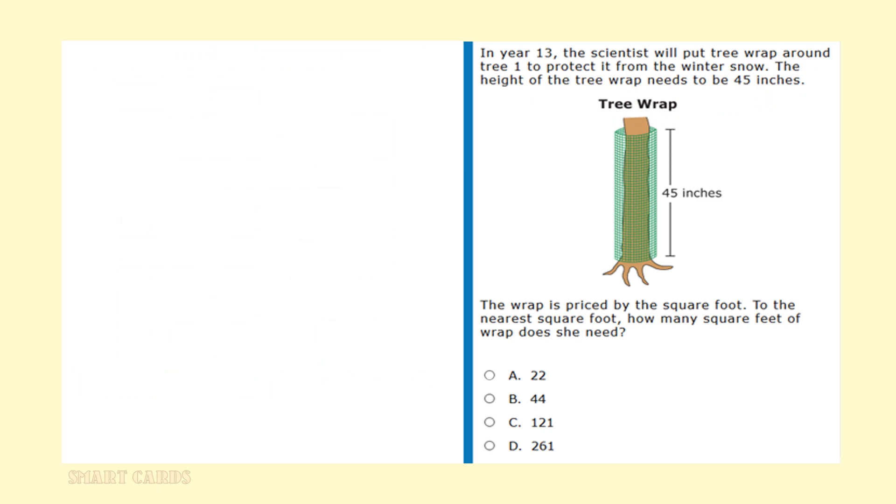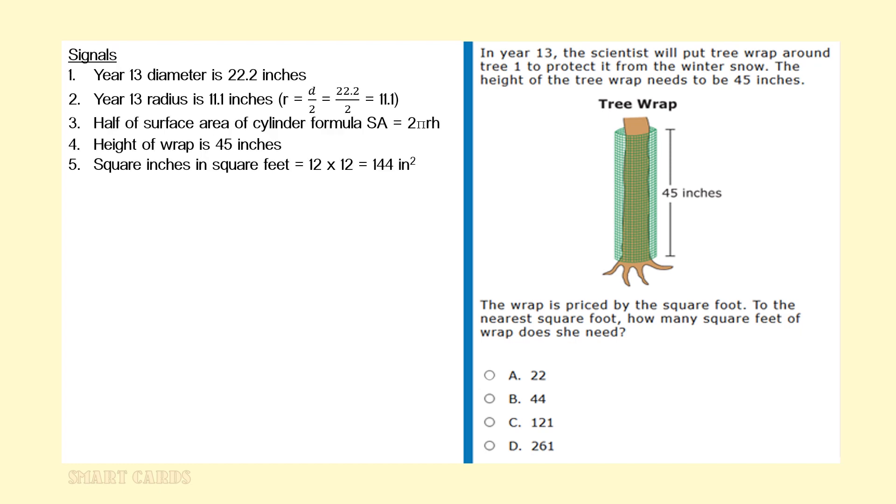In year 13, the scientists will put tree wrap around tree 1 to protect it from the winter snow. The height of the wrap needs to be 45 inches. The wrap is priced by the square foot. To the nearest square foot, how many square feet of wrap does she need? Here are the five signals in this problem. We need the year 13 diameter, which is 22.2 inches. We're going to convert that diameter to a radius, which is 11.1 inches. We're going to use half of the surface area of a cone formula, which is SA or surface area equals 2 times pi times the radius times the height.